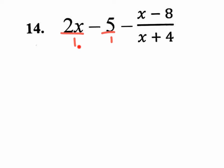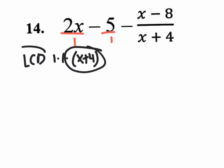So if you have the denominators one, one, and X plus four, what is your LCD going to be? X plus four. You could still go through the motions and ask, could I factor anything? No, I can't factor anything. There is nothing in common in all the terms, so I bring down the rest. Your LCD will be everything brought down: one times one times X plus four, which is really just X plus four.